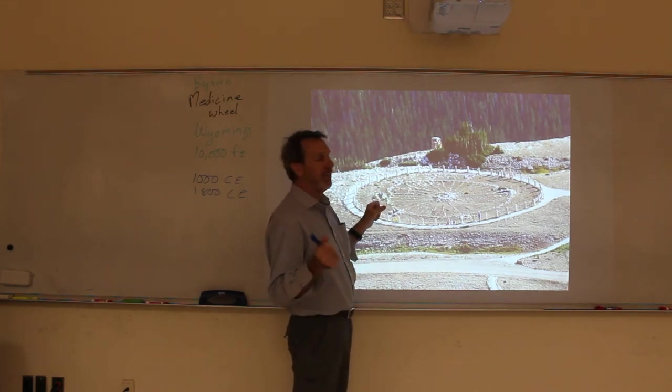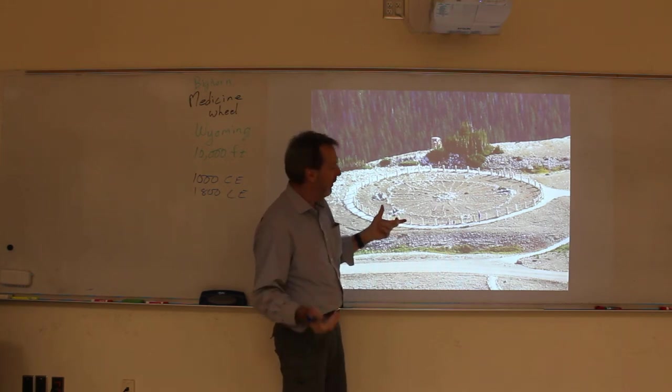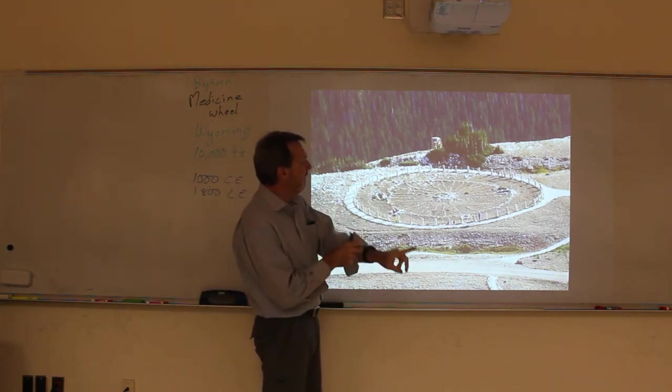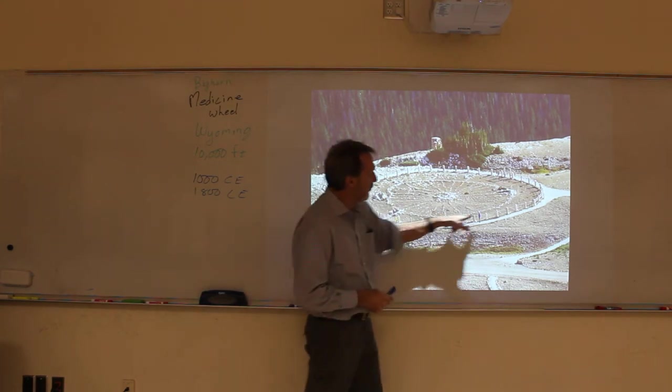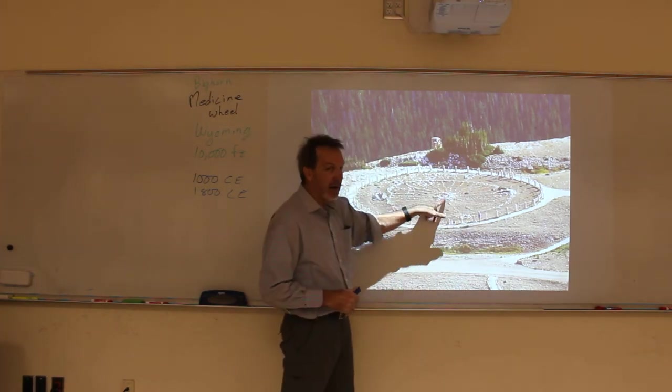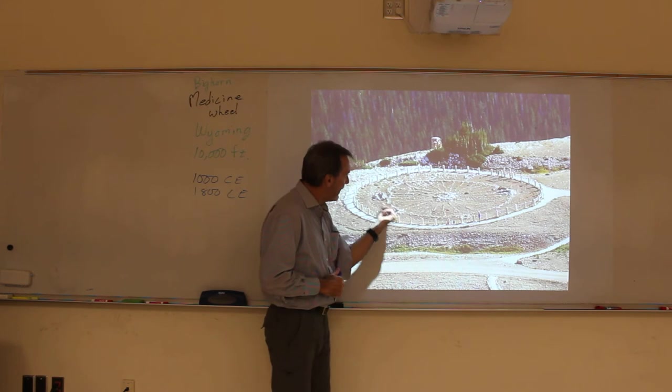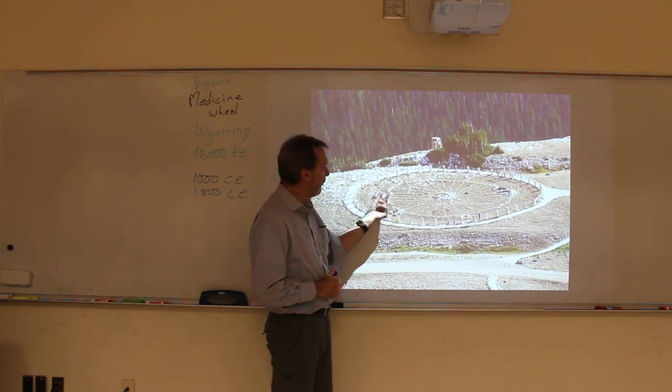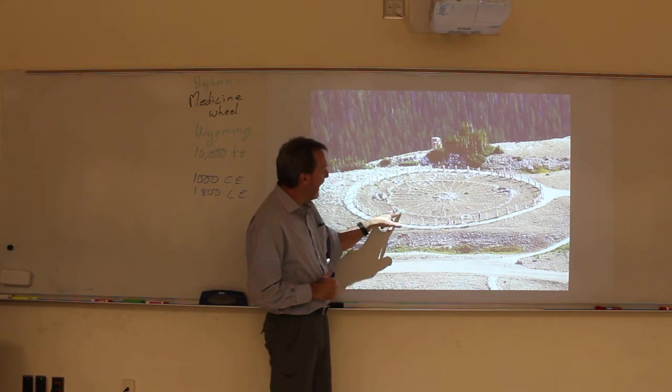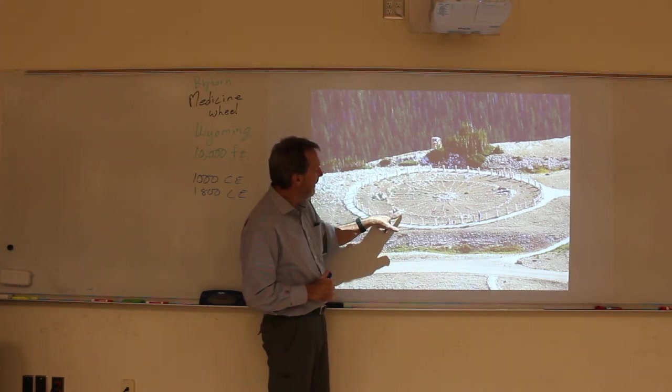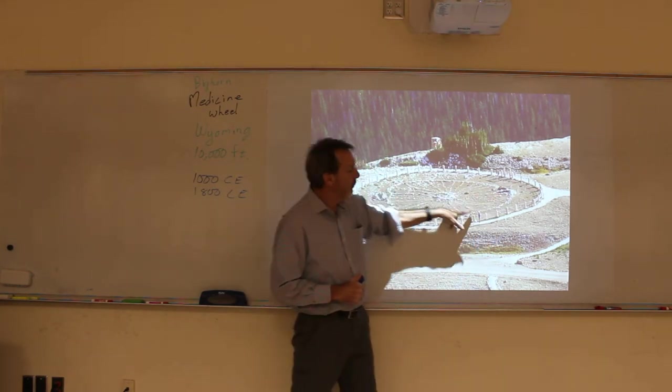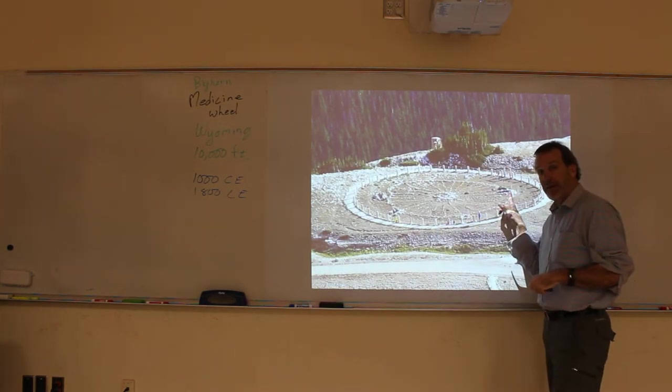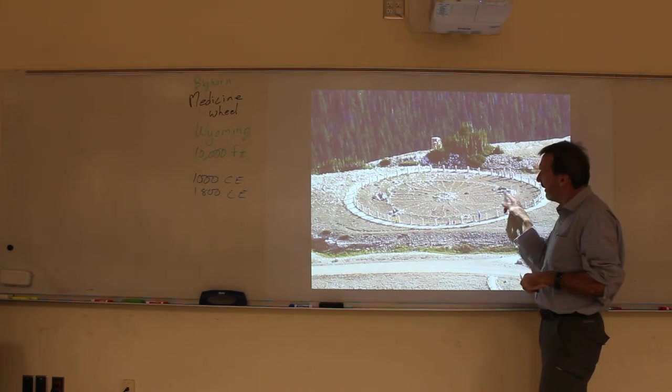This one's interesting because we think it has astronomical alignments. If you look, there's some very interesting features. They made this circle and the hub, but then they put these rock groupings on the outside of the bigger wheel. But this one up here, towards the north, is inside of the circle, not on the outside.